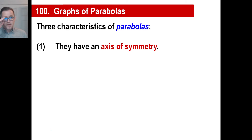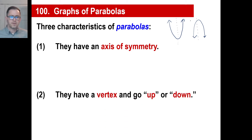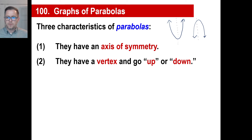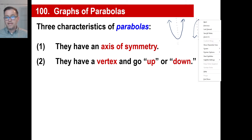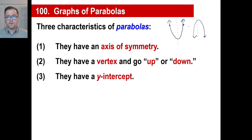There are three characteristics of parabolas you'll want to know because they'll help you graph parabolas without plotting tons of points. Number one: they have an axis of symmetry — basically a line that splits the parabola right down the middle into mirror halves. Number two: they have a vertex — the lowest point on one that opens up, or the highest point on one that opens down. Number three: they have a y-intercept. If you know the axis of symmetry, you can reflect any point to find its mirror point on the other side.